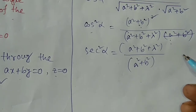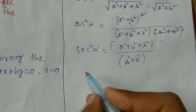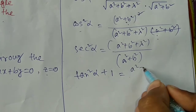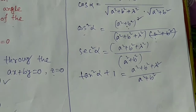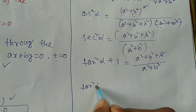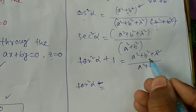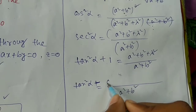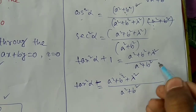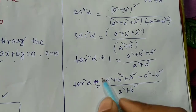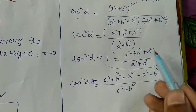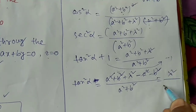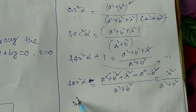To convert, we take the reciprocal: 1 over cos squared alpha equals to (a squared plus b squared plus lambda squared) divided by (a squared plus b squared). We know that 1 plus tan squared alpha equals to 1 over cos squared alpha, so: 1 plus tan squared alpha equals to (a squared plus b squared plus lambda squared) divided by (a squared plus b squared). Therefore, tan squared alpha equals to lambda squared divided by (a squared plus b squared).